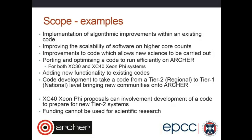Examples of things that might be funded through the ECSE program include implementing algorithmic improvements into an existing code — it doesn't fund the actual research to develop the algorithms, but it does fund their implementation. It also covers improving scalability and performance at higher core counts, design and general improvements to a code that allow science that couldn't be done previously, and porting and optimizing code on the Xeon Phi (KNL) system. It also funds code development for Xeon Phi and Tier 2 systems, but only for Xeon Phi-related proposals. Importantly, it cannot be used to fund scientific research itself.